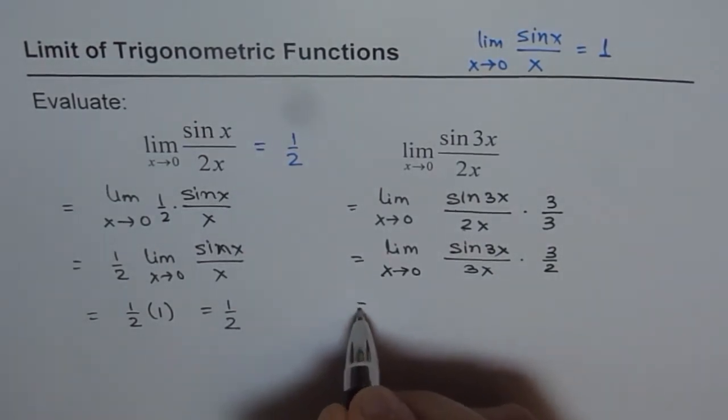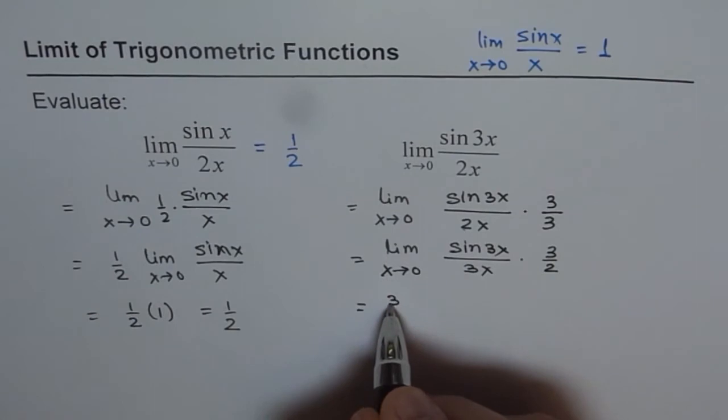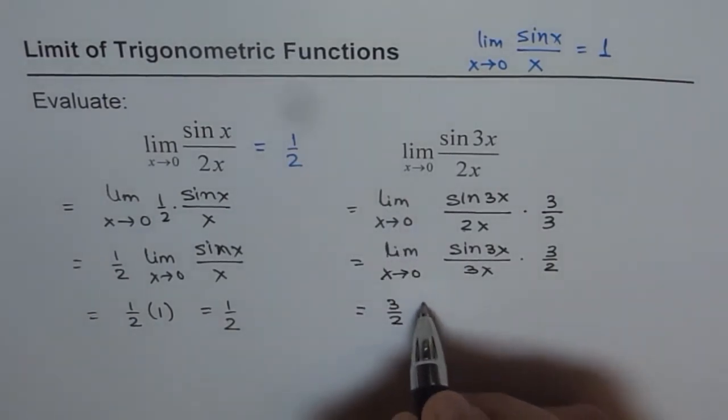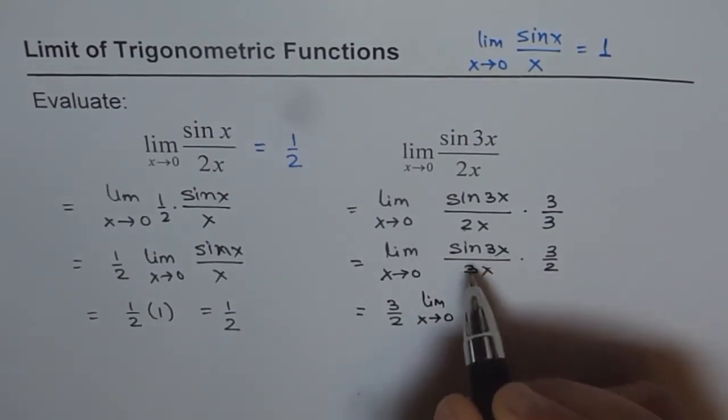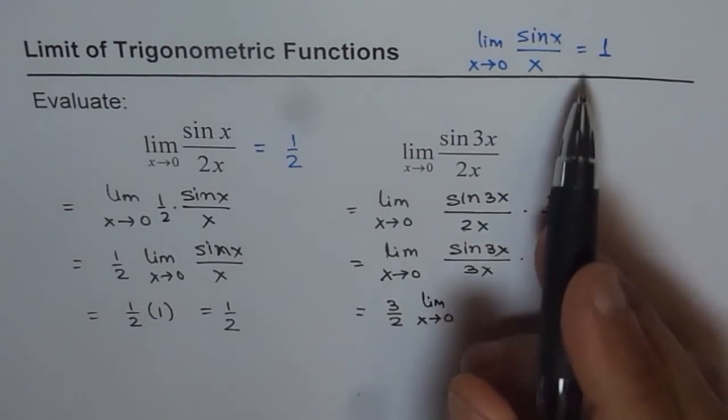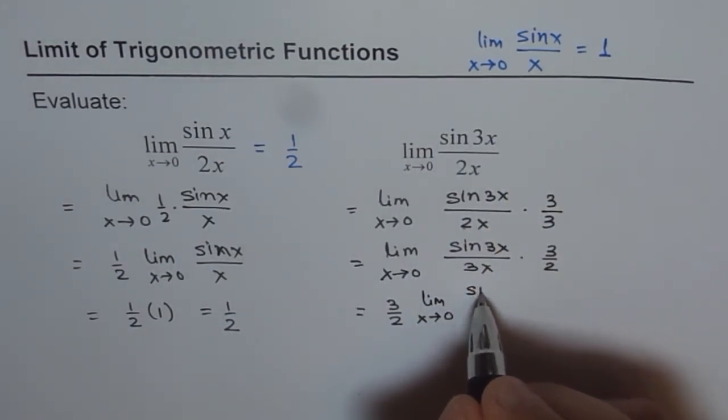Now it's absolutely clear. The next step is 3 over 2 times limit of x approaches 0. And you can think 3x as theta. Then it becomes sin theta over theta. That will be 1. So we'll still write here, sin of 3x over 3x.